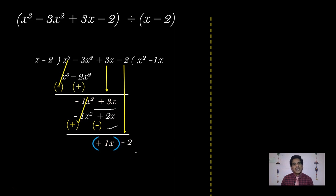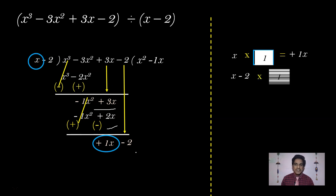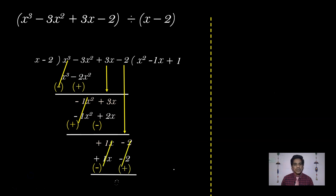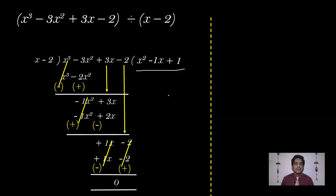Now compare x with x in the divisor: multiply by 1. Multiply divisor x - 2 by 1: x - 2. Write +1 in the quotient. Subtract: x - x = 0 and -2 + 2 = 0. The remainder is 0. So the quotient of this division is x² - x + 1. Therefore g(x) = x² - x + 1.